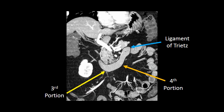The third portion of the duodenum sweeps under the superior mesenteric artery, and then the fourth portion re-enters the peritoneal cavity. The ligament of Treitz is not readily identifiable on CT, but the bend from the fourth portion of the duodenum into the proximal jejunum roughly demarcates the ligament of Treitz, indicated by this blue arrow.